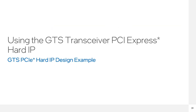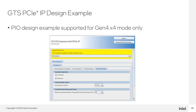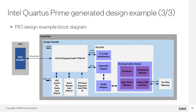Now that we understand the GTS transceiver PCIe IP better, let's see how you can simplify your design flow using the design example. Like many Intel IP cores, the IP parameter editor can also generate an example design in Verilog and VHDL. The example design is a fully validated design for simulation and hardware testing. You can target a specific development kit with the design if available. Generate the design example using the example designs tab in the parameter editor. The design example supports simulation with popular simulation tools supported by the Quartus software. Note that a software driver is not auto-generated during compilation.